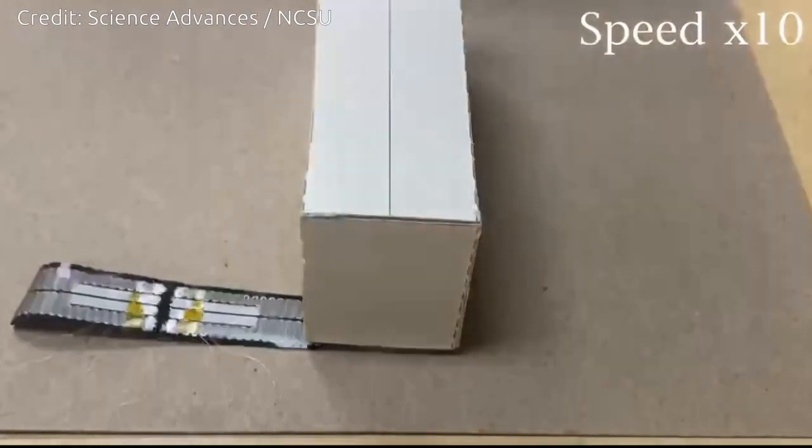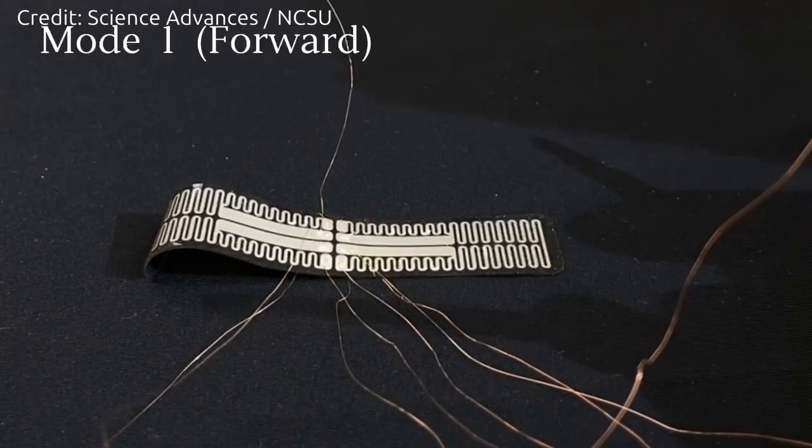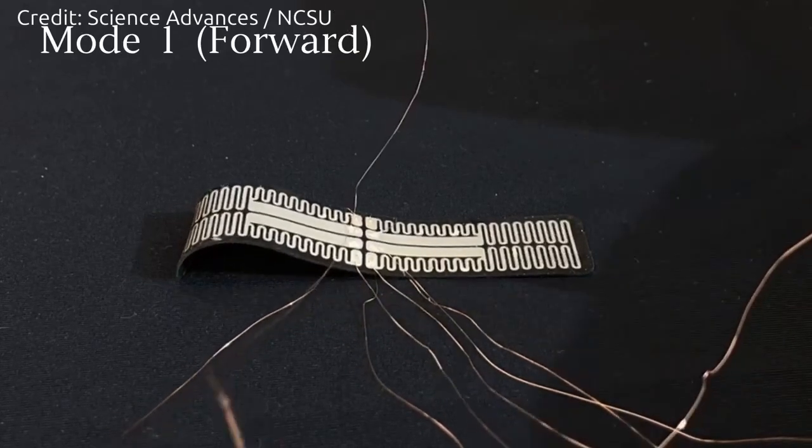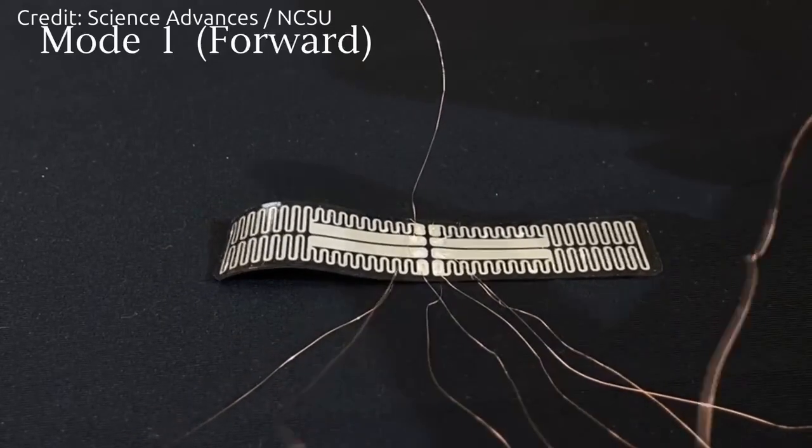Engineering soft robots that can move in two different directions is a significant challenge in soft robotics. The embedded nanowire heaters allow them to control the movement of the robot in two ways.